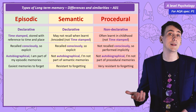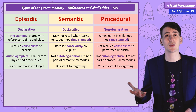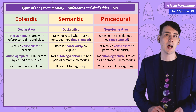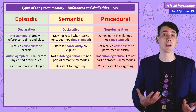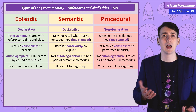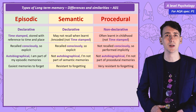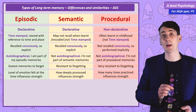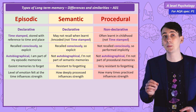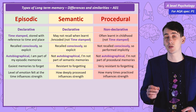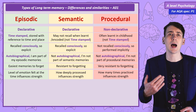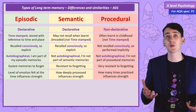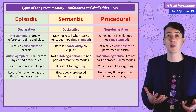Episodic memories are easy to forget. Semantic memories are more resistant to forgetting. And procedural memories are very resistant to forgetting — we even have the phrase 'it's like riding a bike' to describe how you can perform a skill well after many years without doing it. The level of emotion felt when coded influences the strength of episodic memories. How deeply information is processed affects the strength of semantic memories — how many other bits of information we can link to it. And for procedural, how much practice we've had with that skill will affect its strength.